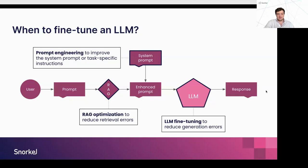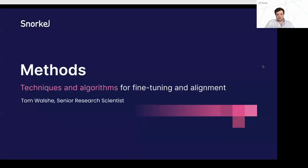Then we put the prompt into the LLM, generate a response, and maybe that response is great. But if it's not, how do we think about where it's failed? We consider two dominant error modes: pre-LLM retrieval errors — where your RAG system isn't retrieving accurate domain representations — and generation errors, where the LLM has perfect context but isn't generating responses up to your standard. Fine-tuning's success is in reducing generation errors. We think you should start with prompt engineering, then RAG if applicable, and finally, if you're still getting generation errors, tackle LLM-based fine-tuning.